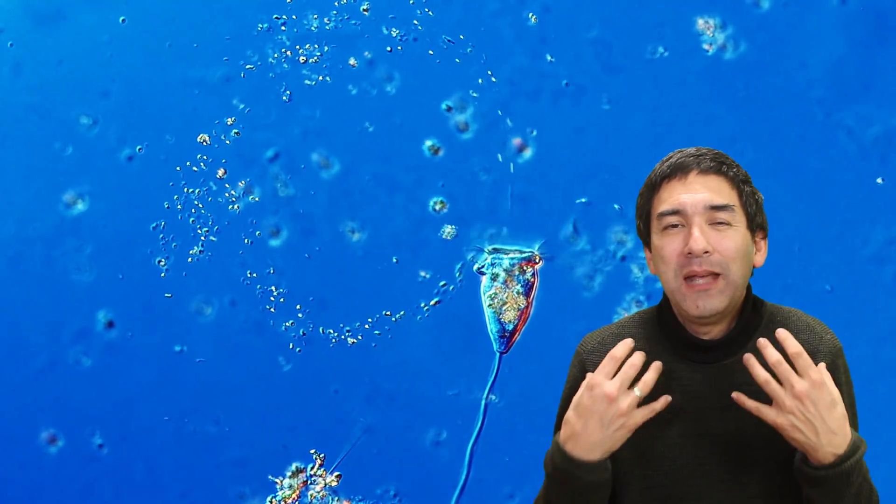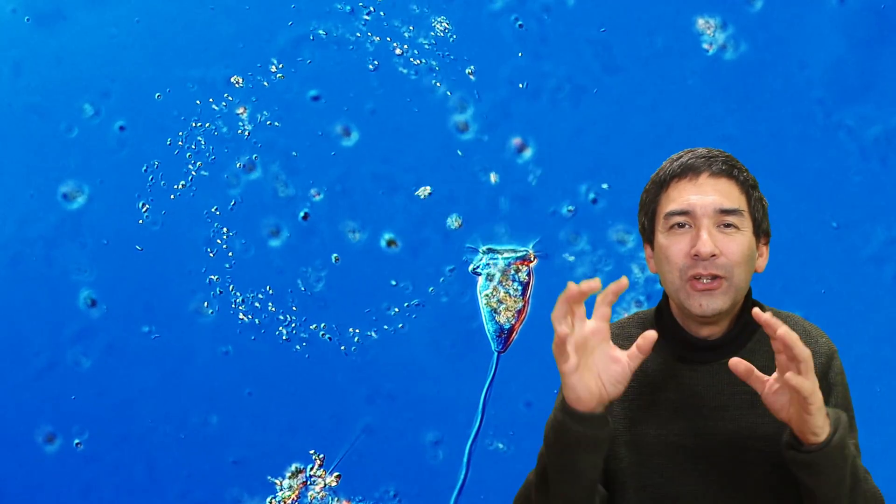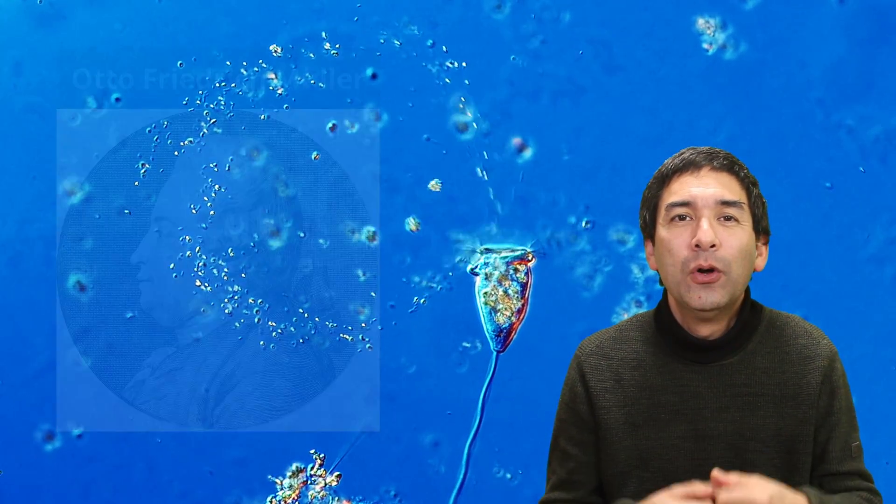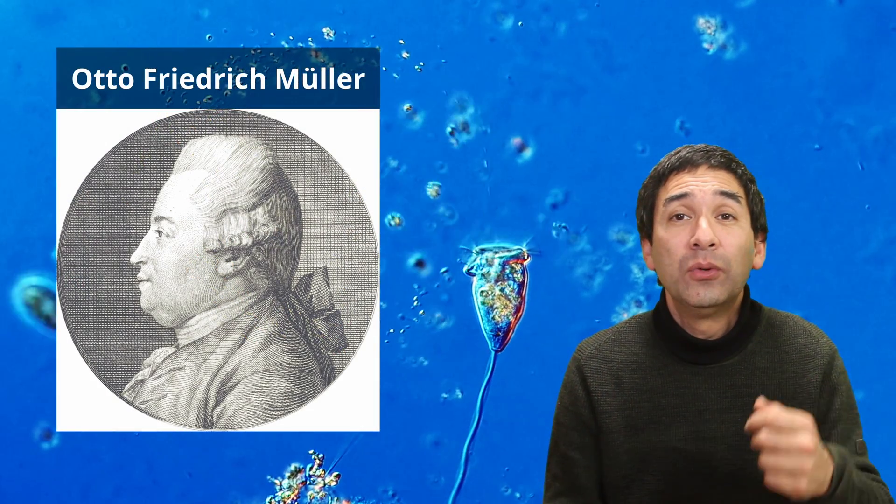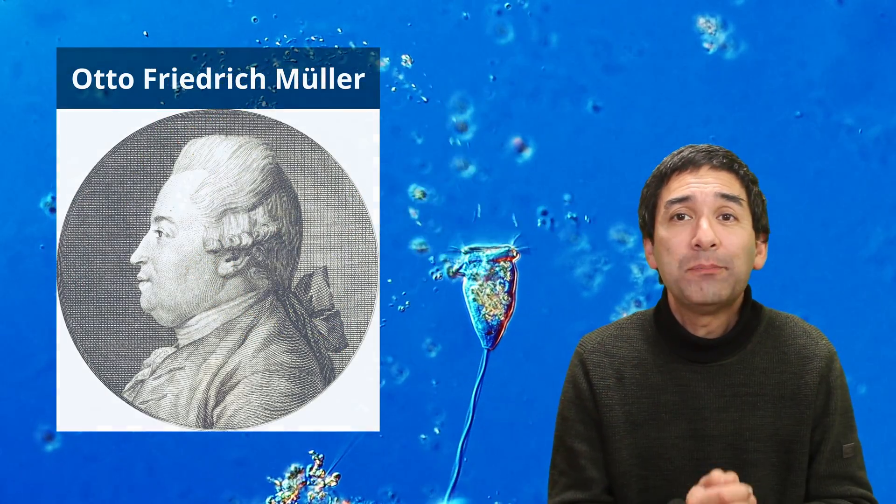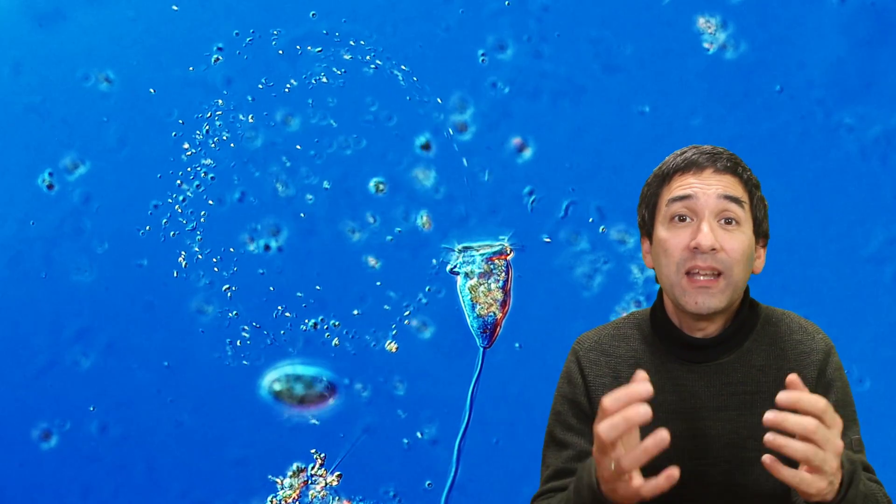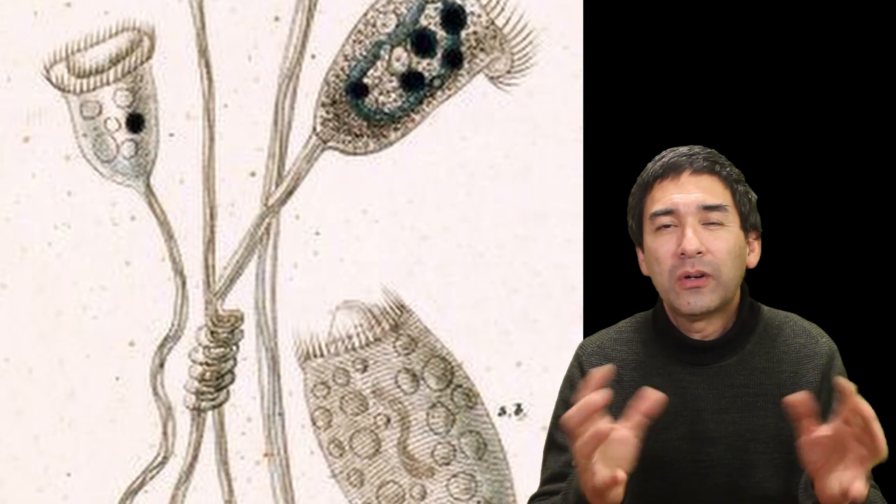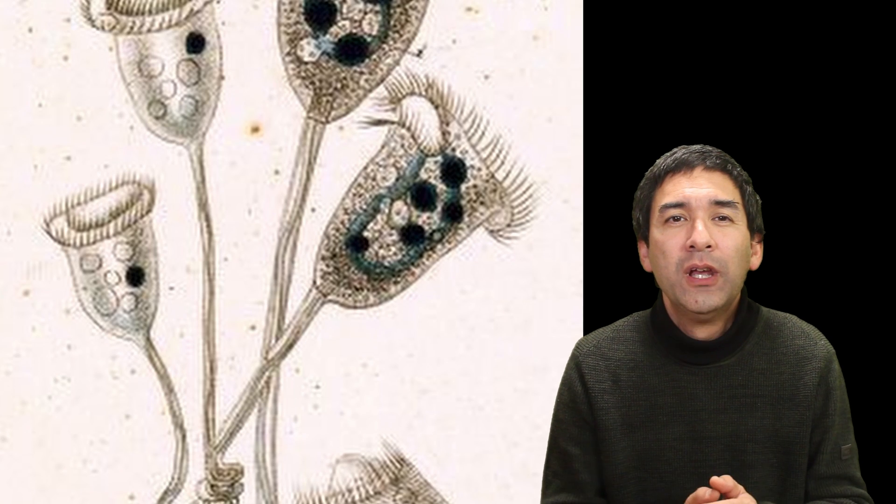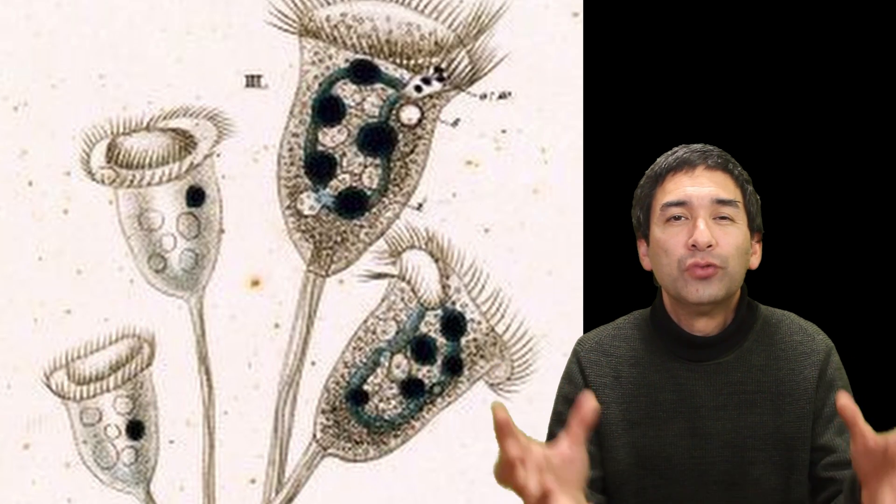I guess that maybe the microscopes were not quite good enough yet to see the little cilia beating. Otto Friedrich Müller listed no less than 127 species of Vorticella back in 1786. But some of those were misclassified, and they're now known to be either other protozoa or even rotifers.